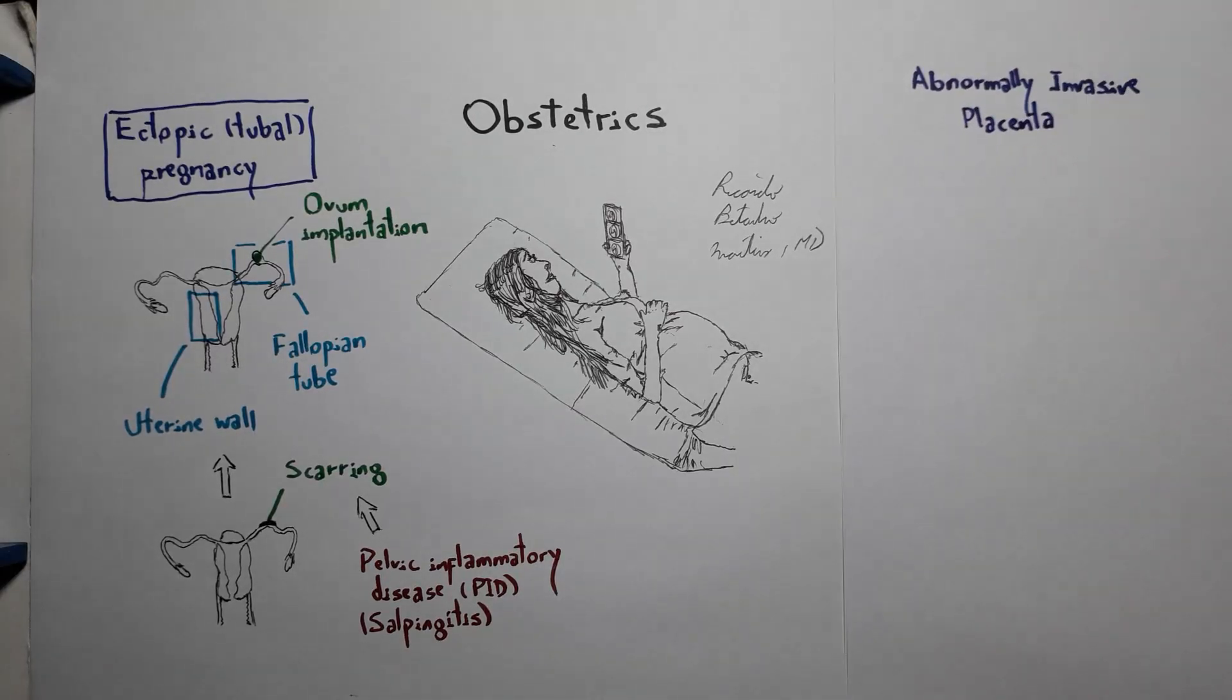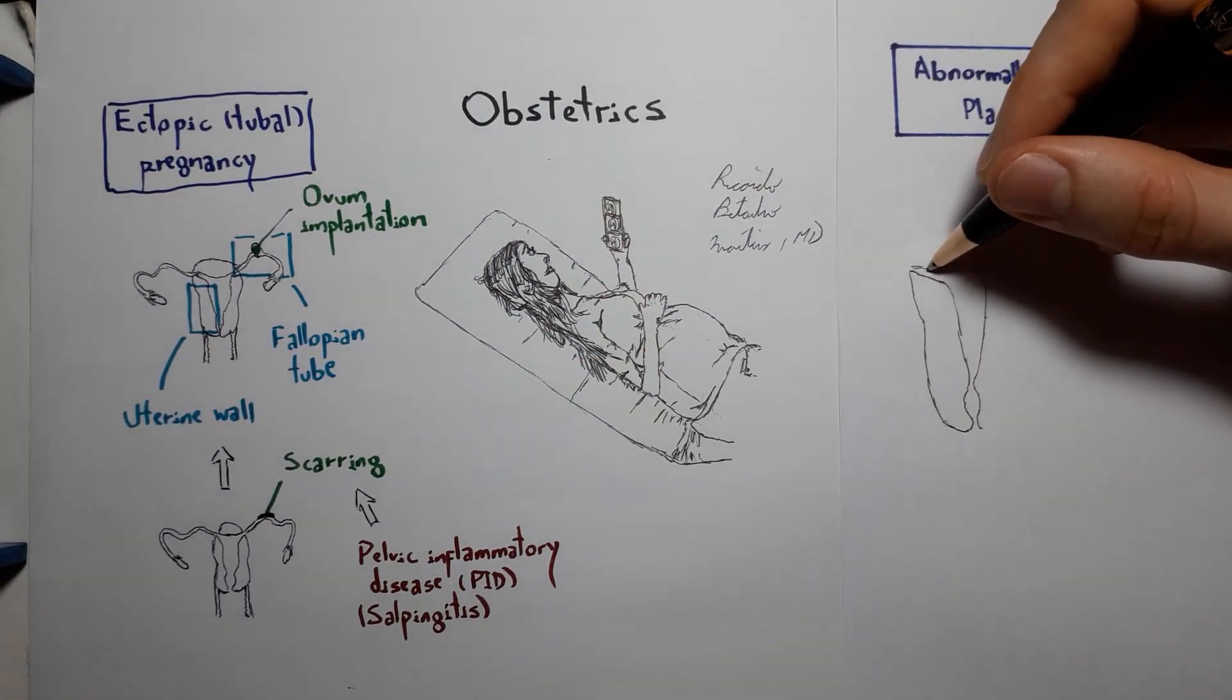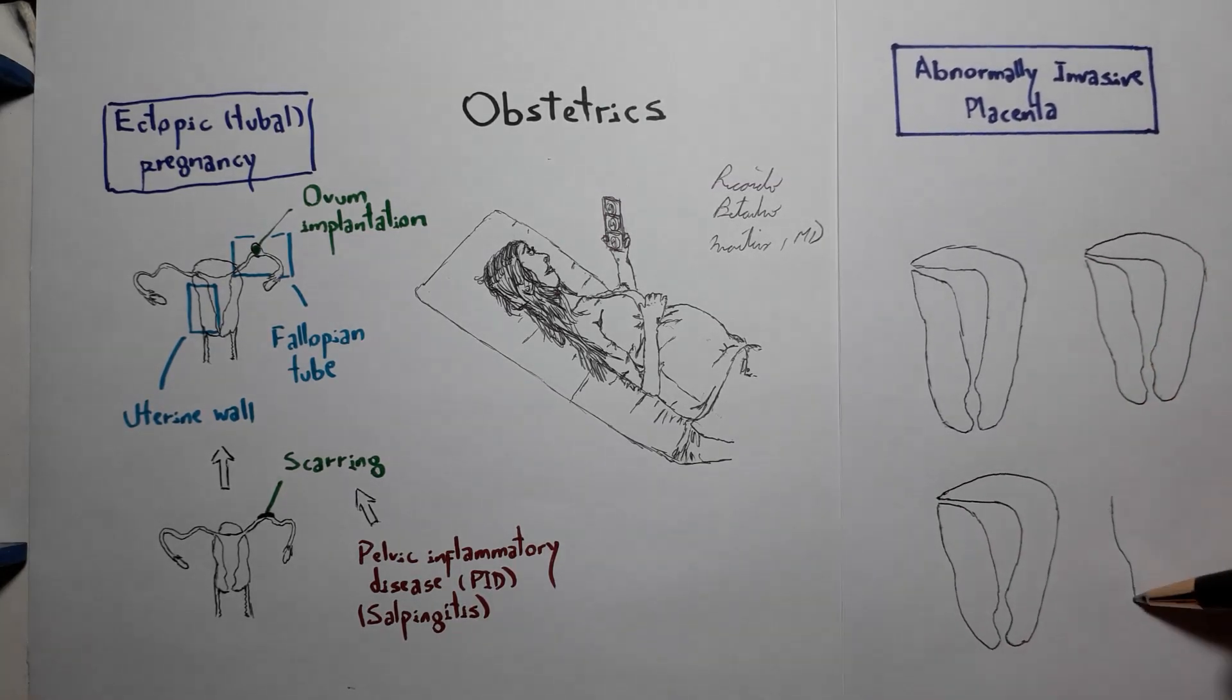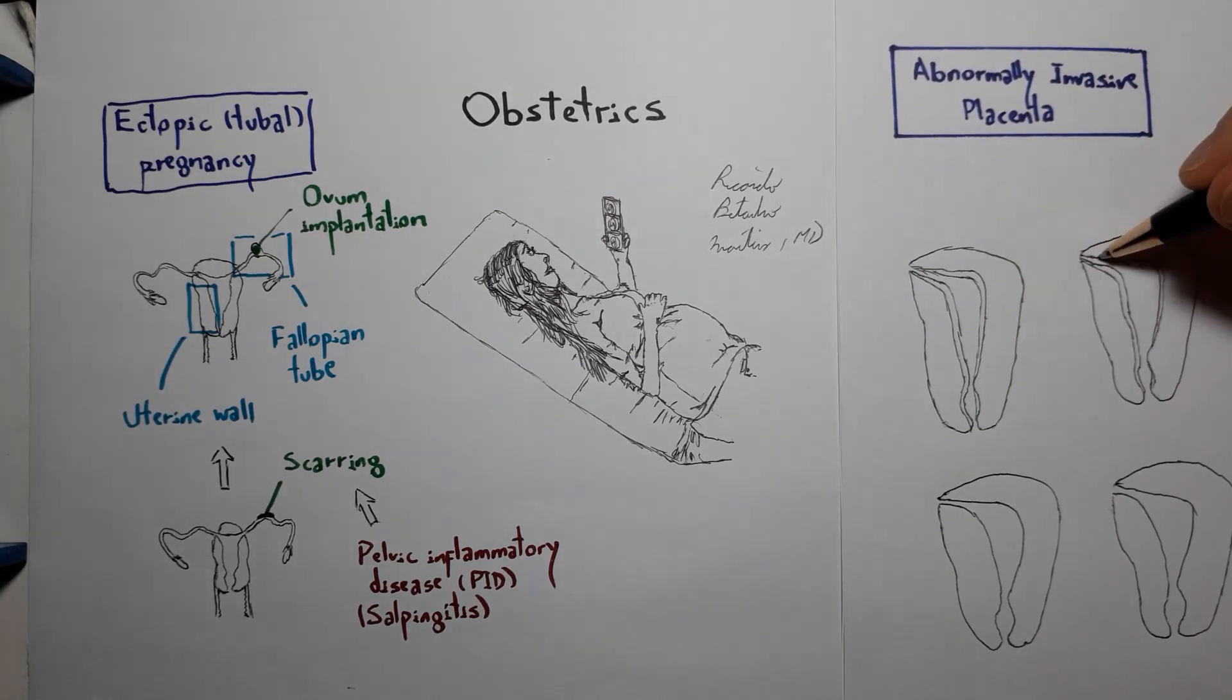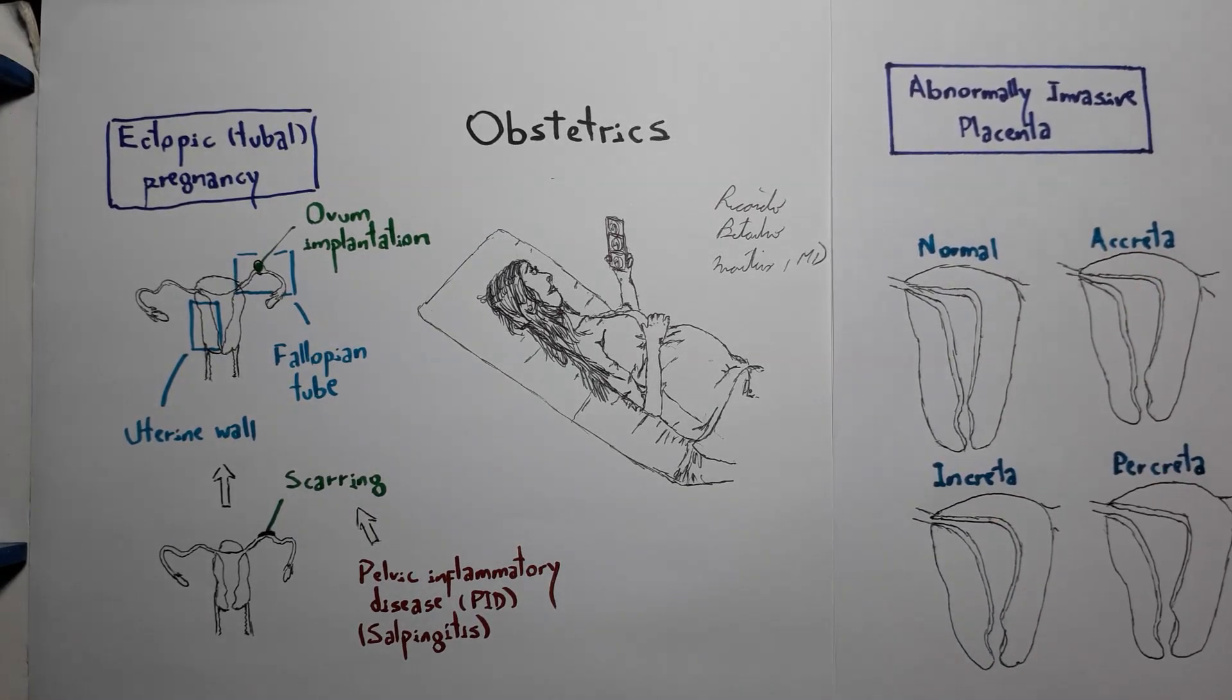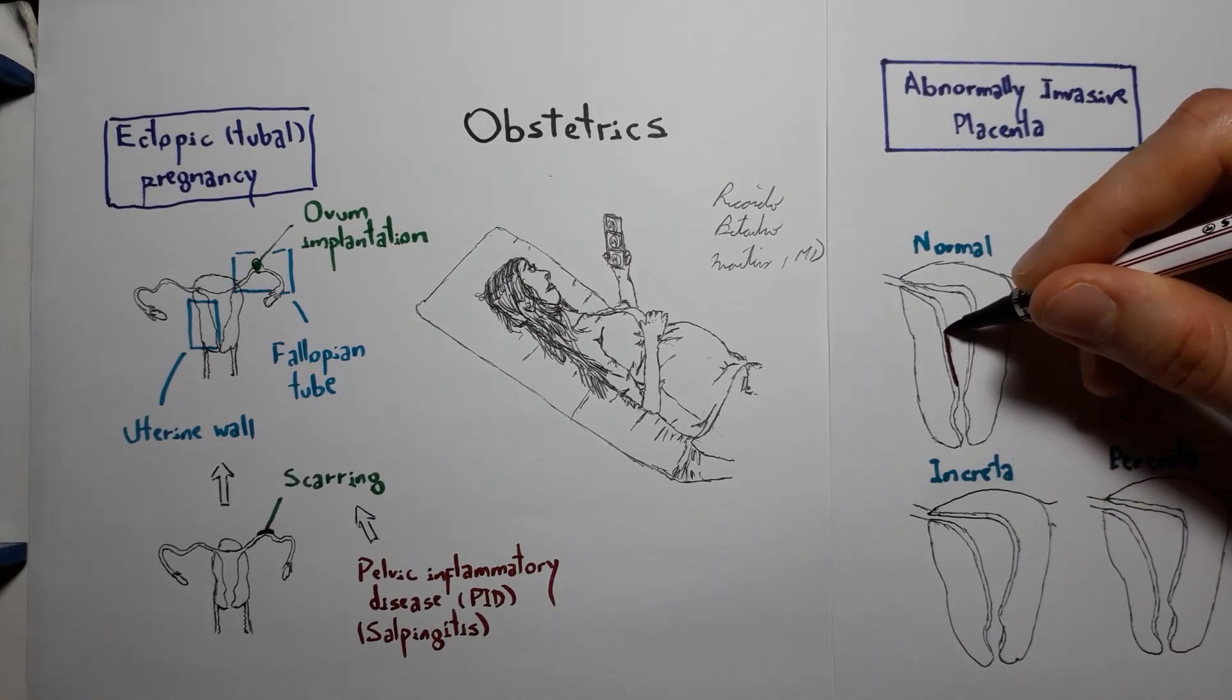Even if the blastocyst manages to correctly implant on the uterine wall, however, poor location or development may lead to placental implantation abnormalities, such as abnormally invasive placenta: placenta acrita, incrita and percrita, when the placenta attaches to the myometrium without the presence of a decidual layer.